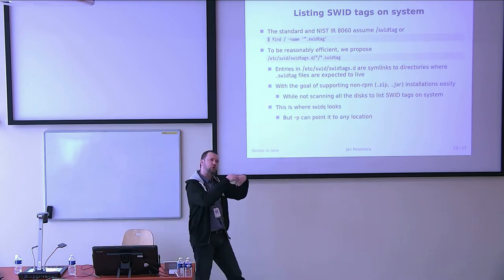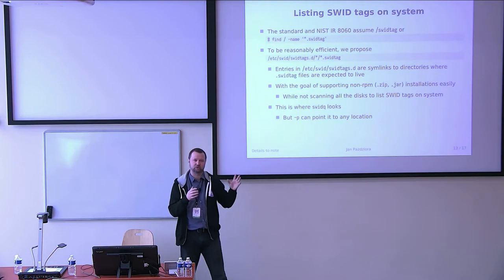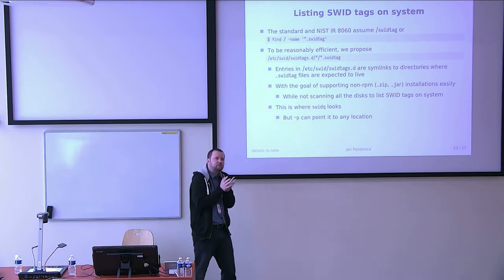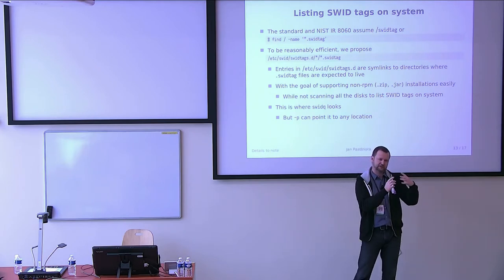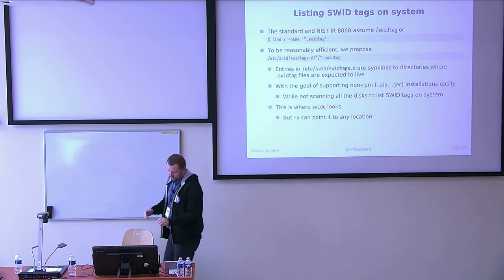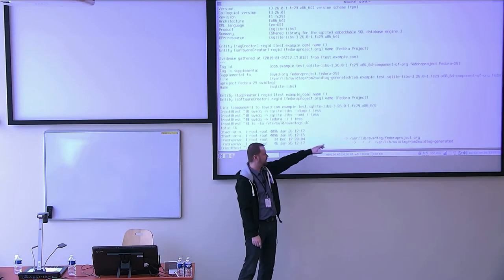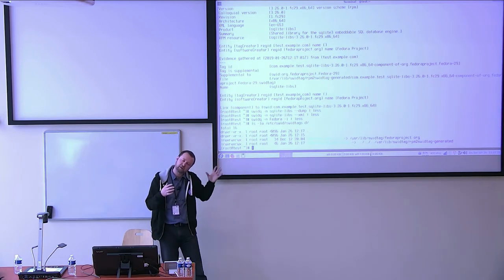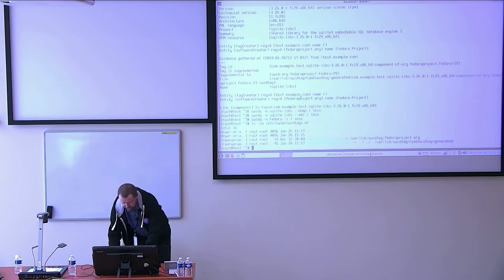When you want to find a SWIDTAG on a system, the standard seems to assume that you basically scan the whole disk — and then when you find a SWIDTAG, what is next to it is the package you're looking for. To be reasonably efficient in enumerating them, you need to process all SWIDTAGs to resolve supplemental information for any particular one. So we came up with a plan: in swidtags.d we propose symlinks to basically locations that hold SWIDTAGs, so that for Fedora or Red Hat Enterprise Linux the standard allows us to define a vendor-specific or platform-specific way of finding SWIDTAGs in this directory.